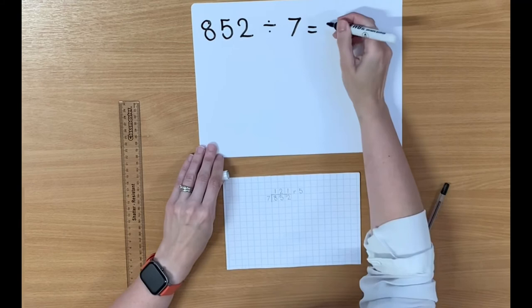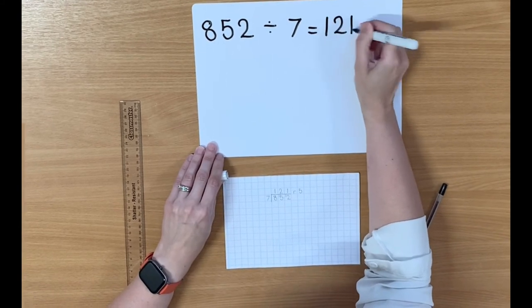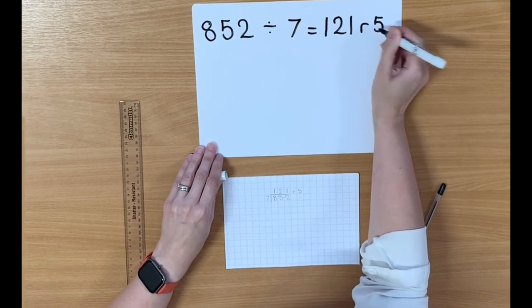So we write our answer as 121, the little r for remainder 5.